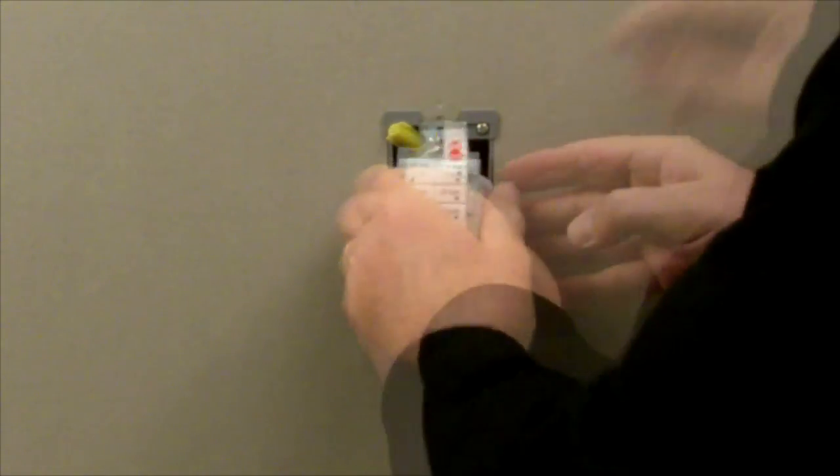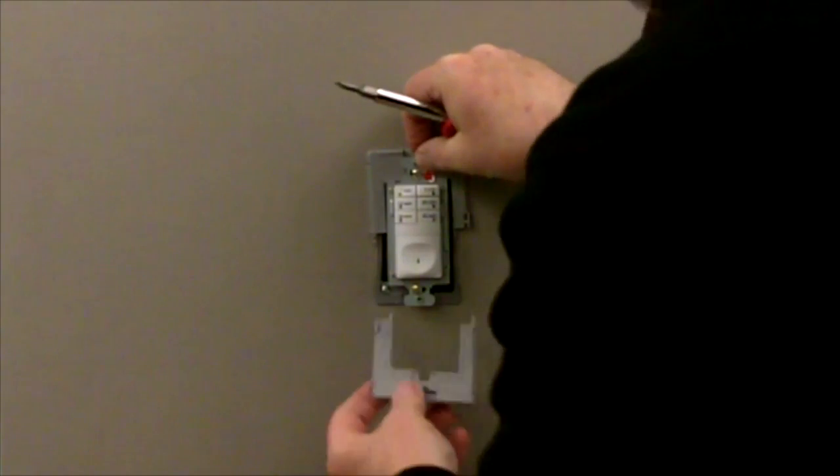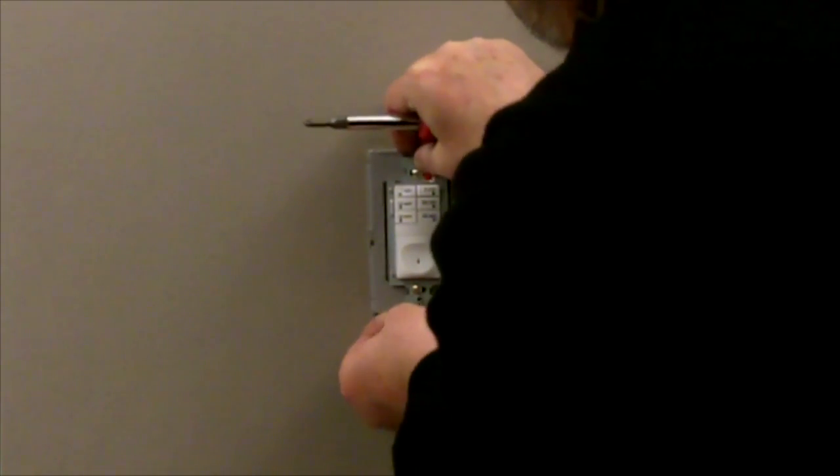Place the RT1 into the wall box with the time selection buttons positioned above the large on-off button. Secure the RT1 to the wall box using the screws provided.